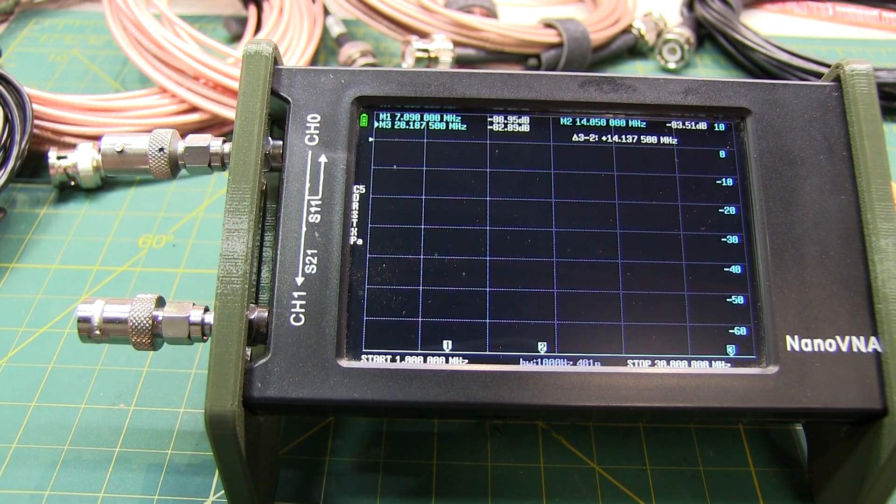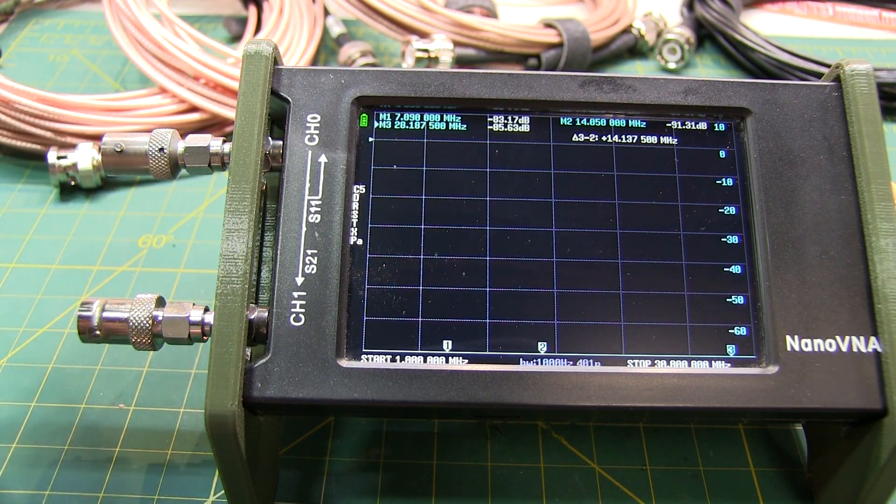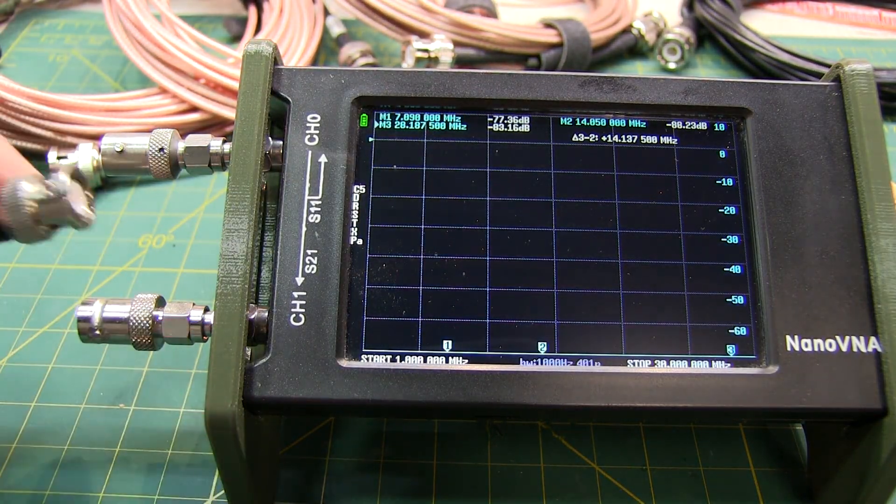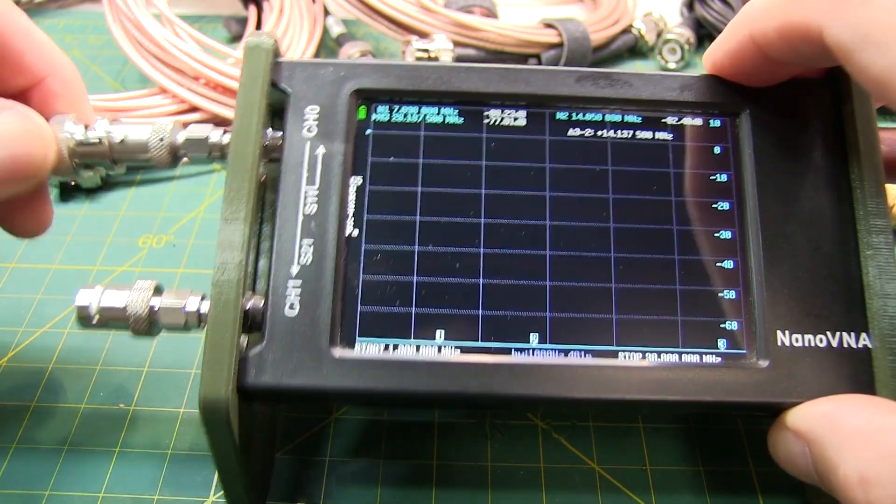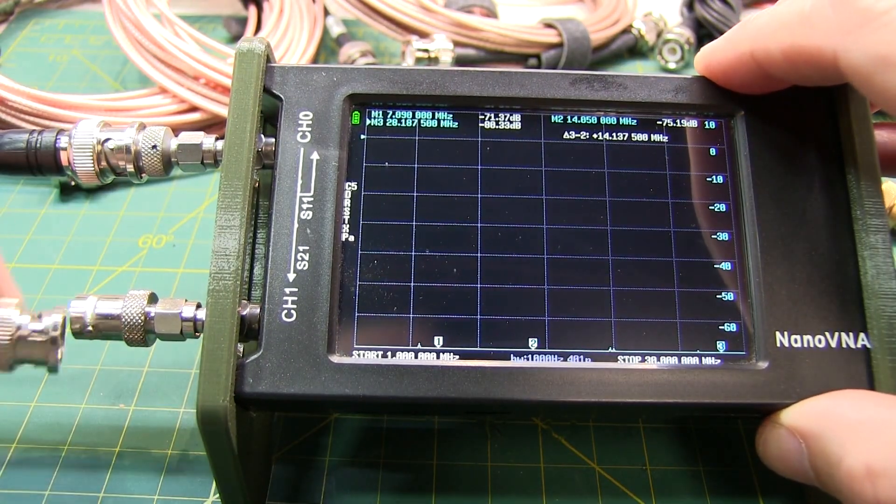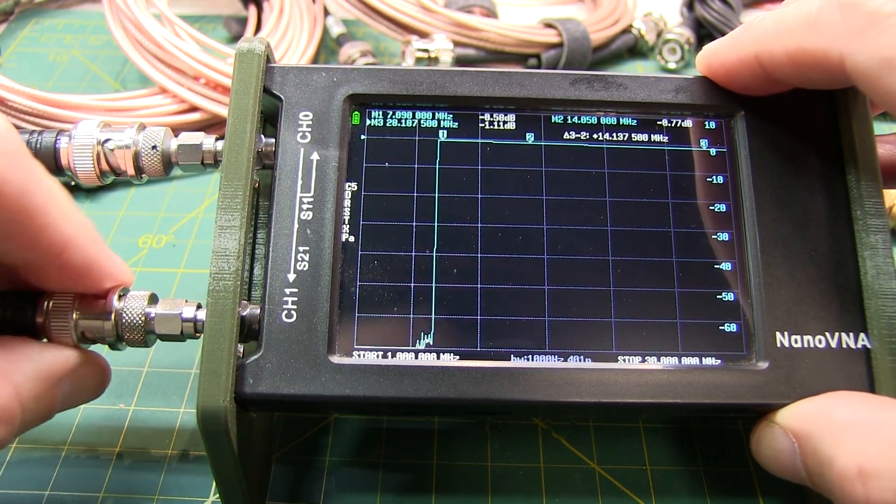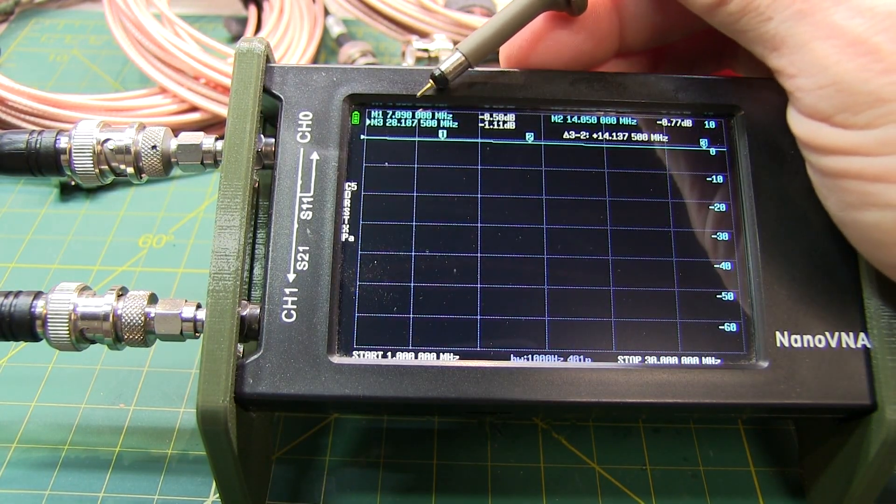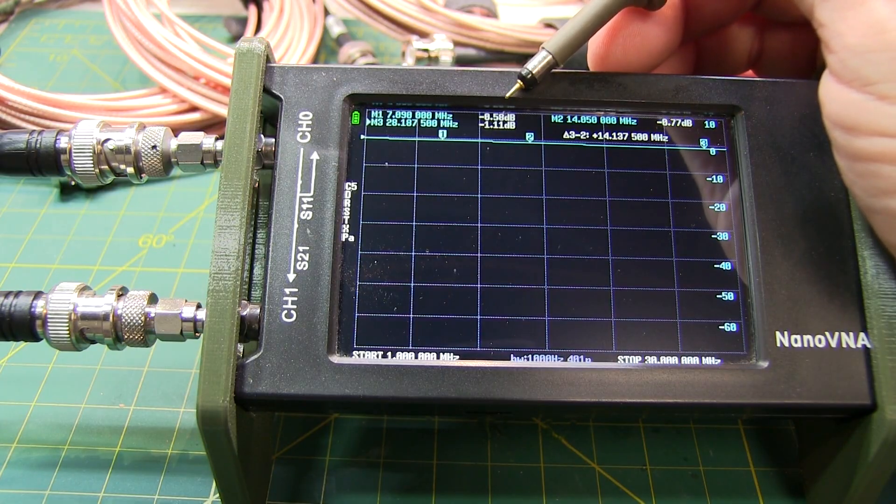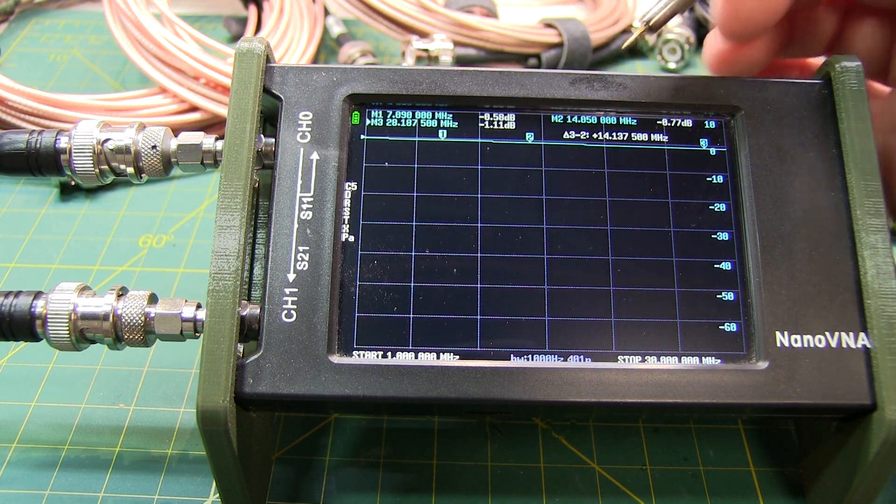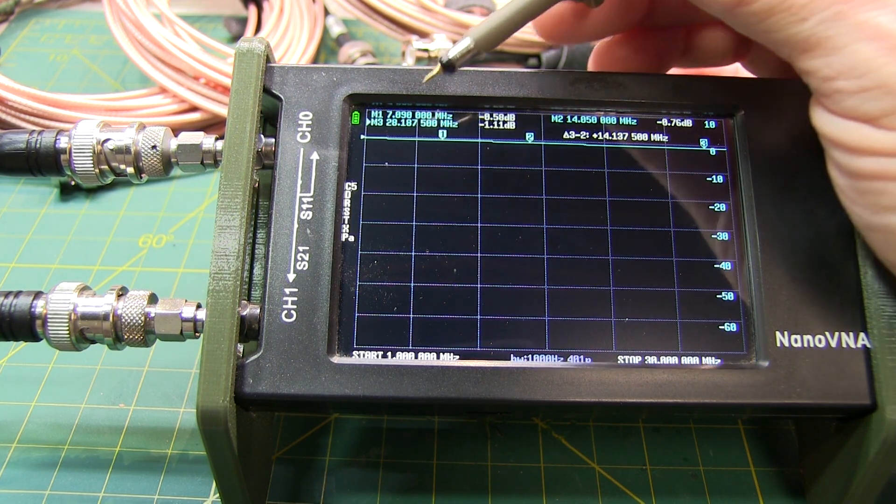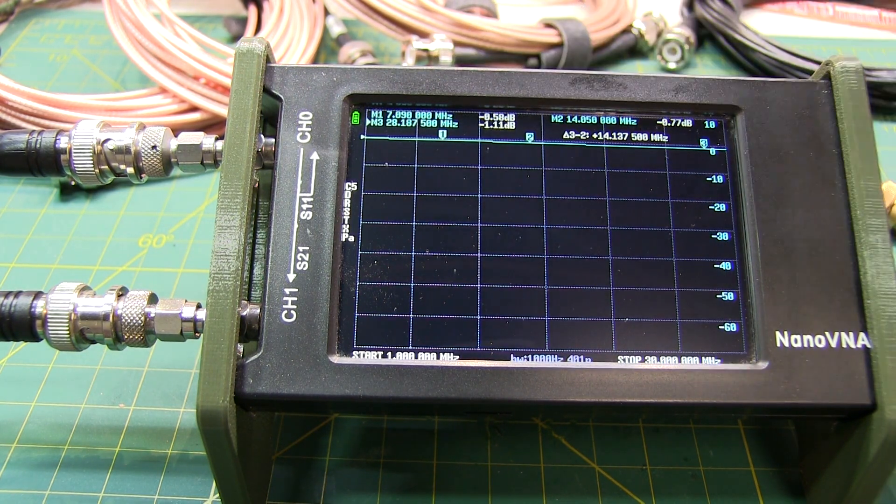Now it's really just a simple matter of hooking up each of our test pieces of coax. So our first one here is the RG-174, this 25-foot piece here. We'll connect that up to port 1 and port 2. And if we take a look at the measurements here, we can see that in the 40-meter band, our loss is about 0.58 dB. On the 20-meter band, it's about 0.77 dB. And on the 10-meter band, it's about 1.11 dB.